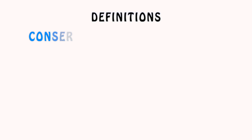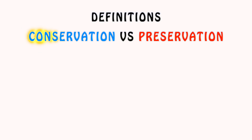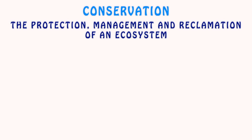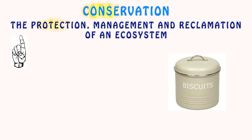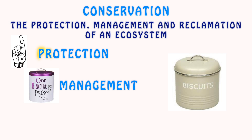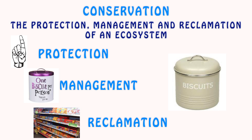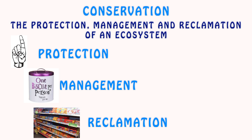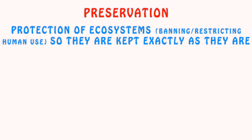The first thing we must enunciate is the distinction between the two very often confused terminological definitions: conservation and preservation. Conservation is the protection, management, and reclamation of an ecosystem. Think of your biscuit box — you protect your biscuit box, you manage it by controlling how many biscuits can be sustainably eaten, and finally you ensure your biscuit box is topped up when essential resources are running low.